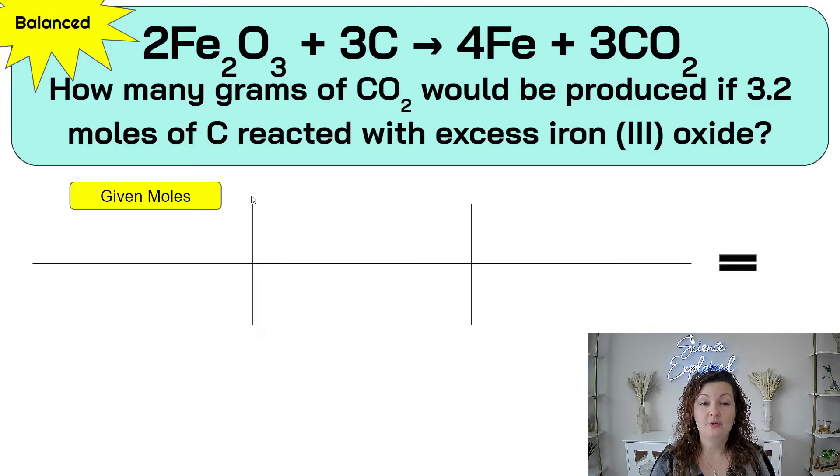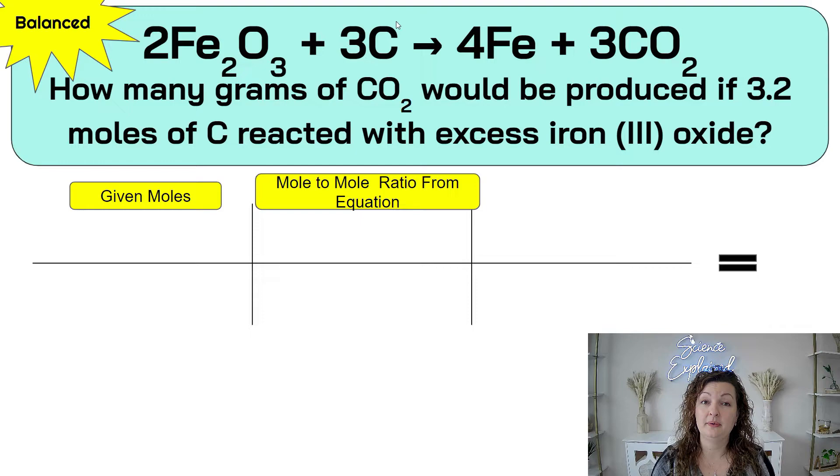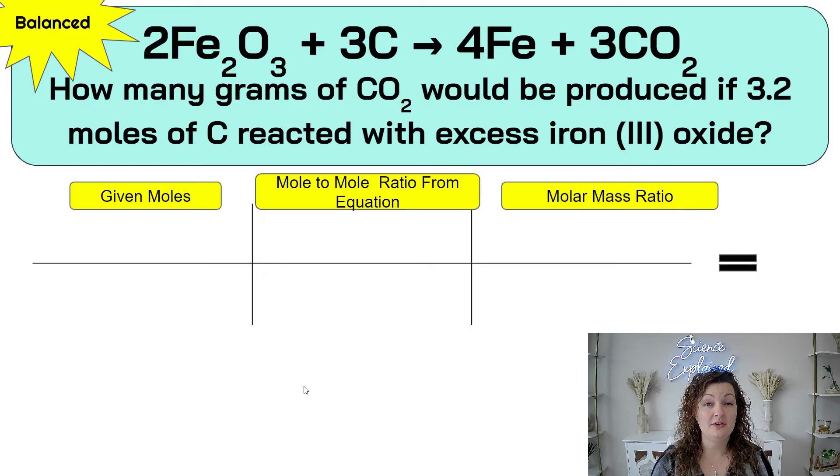Now let's lay out our roadmap and make sure we know where we're going. We always start with our given number. In this case, it's given moles. We want to end up going to a mole to mole ratio from our balanced chemical equation, so we can have that moles in the middle converting into the desired compound or element in moles so that we can eventually turn it into grams. And we turn it into grams by doing our molar mass ratio.